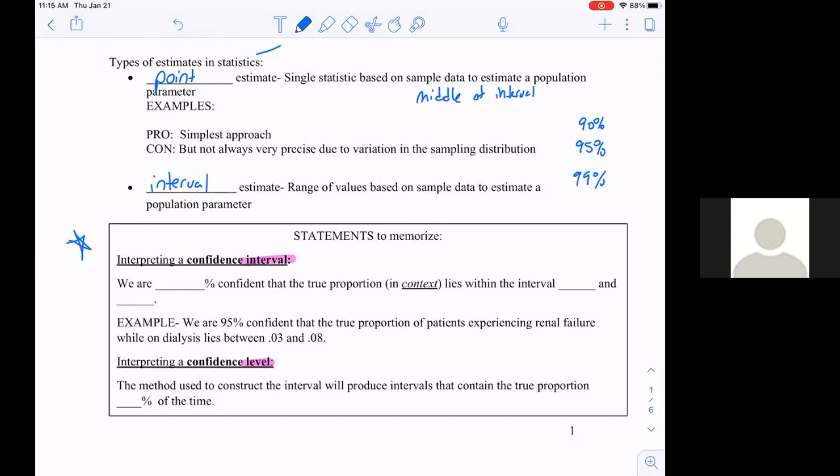We'll be 90 percent confident, 95 percent confident, or 99 percent confident. One thing we have to grasp: if I want to be confident that I captured the true mean, do you think I need a wider interval or a narrow interval?